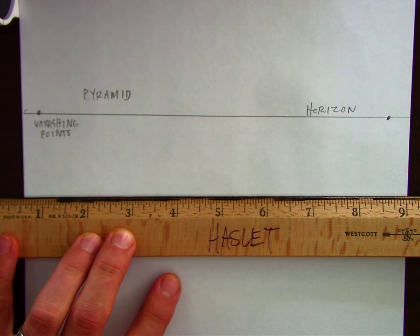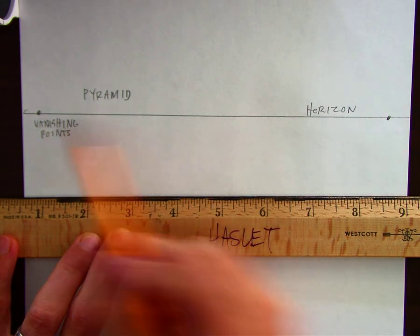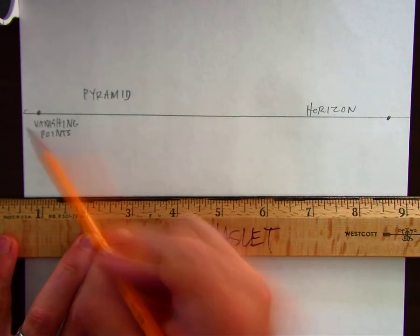So I've got the same setup as I had before. I've got this horizon line. I've got two vanishing points.